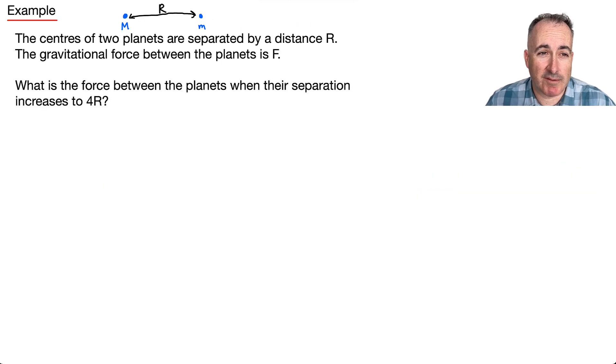Let's do an example. Here we have a situation where we have the center of two different planets, maybe mass M and mass M, with distance between them as r. The gravitational force between the two planets is F, which means the big M here feels a gravitational force caused by M going to the right because it's attractive, and this one on the right feels that same gravitational force on the left. Now what's the force between these two if the separation increases to 4r? In other words, I take these two masses and I pull them further apart.